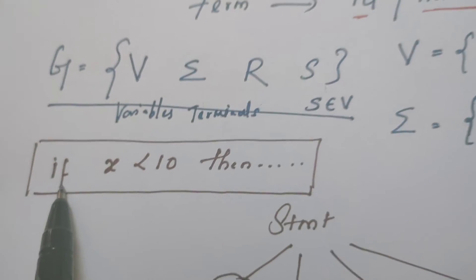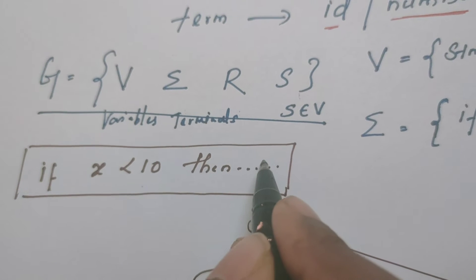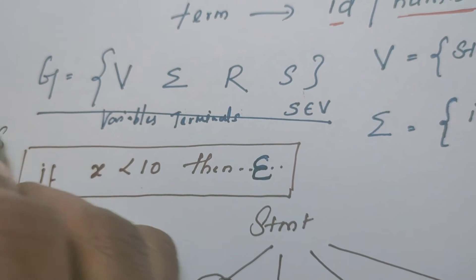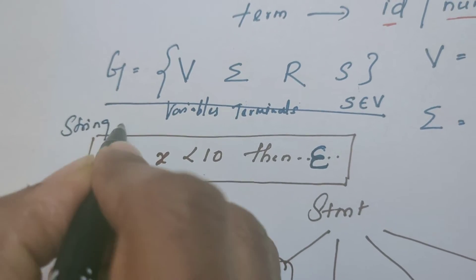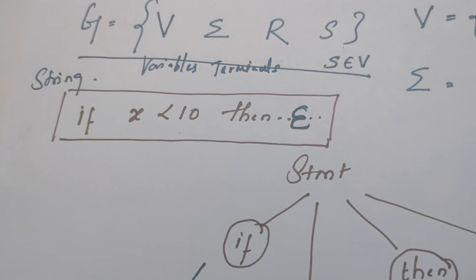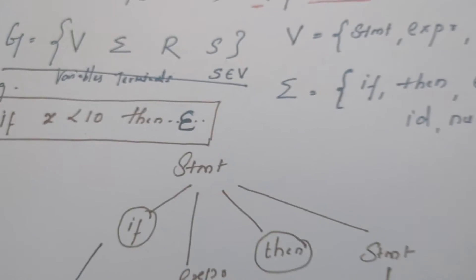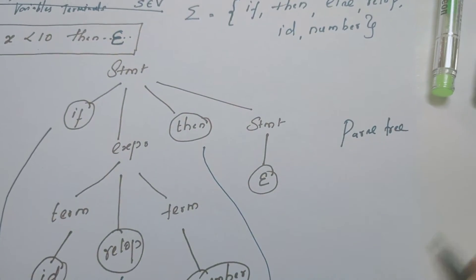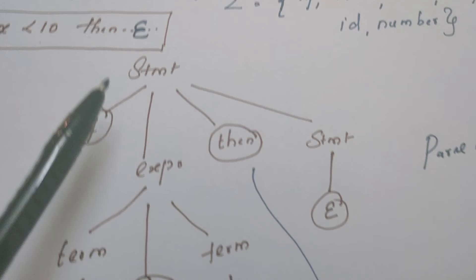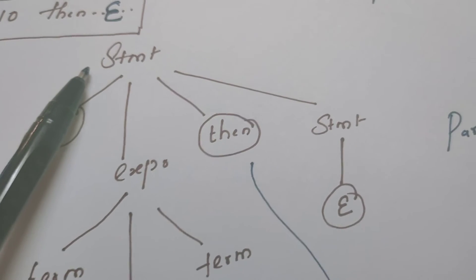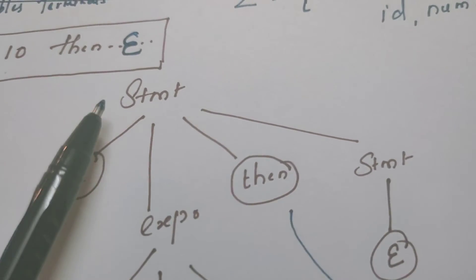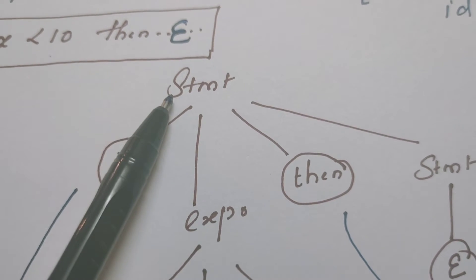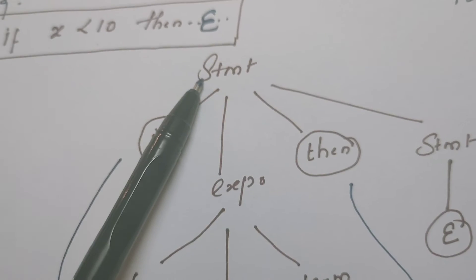Now from this grammar I'm going to derive the string 'if x is less than 10 then epsilon', and in doing so I'm going to construct a parse tree. The construction of the parse tree begins from the start symbol of the grammar. The start symbol of the given grammar is 'statement', so I have written statement at the root of the parse tree.